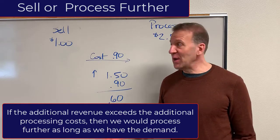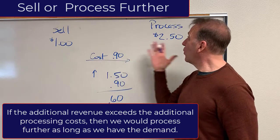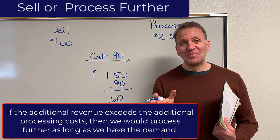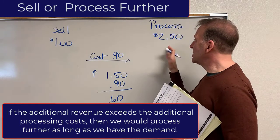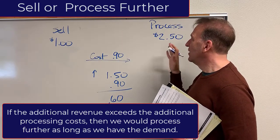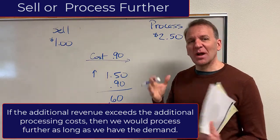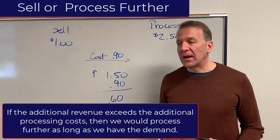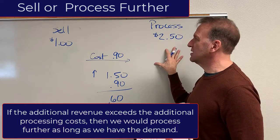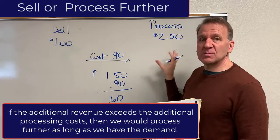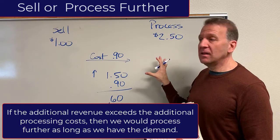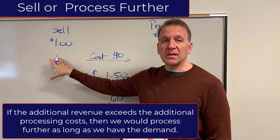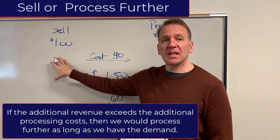In this scenario, I would want to process it further as long as I have the demand at this level. So you want to take a look at the demand too, but if we've got the demand, then we'd want to process it further. It's possible we can satisfy this demand and maybe then also still sell some at the tomato sauce level.